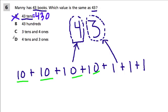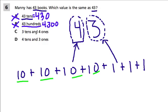43 hundreds is even bigger. Every time you have 10 hundreds you have a thousand, so 40 hundreds gives you 4,000, and 43 hundreds gives you 4,300 — a really big number. That's not what we have either.